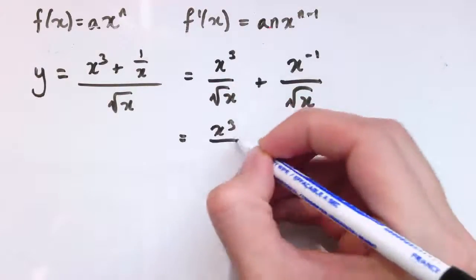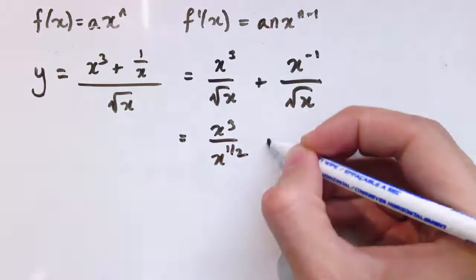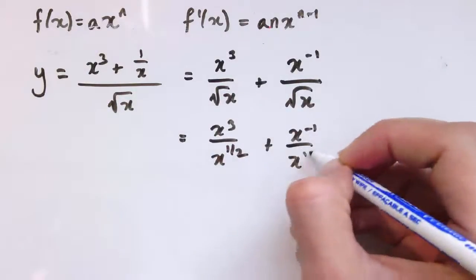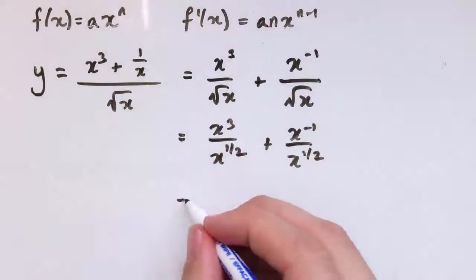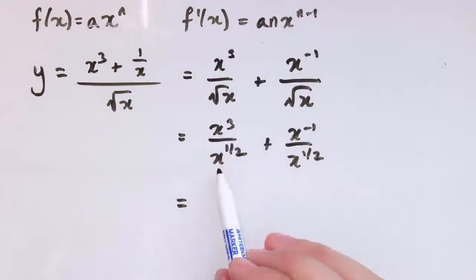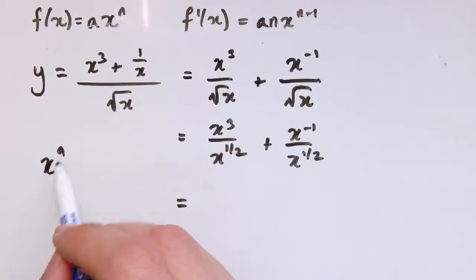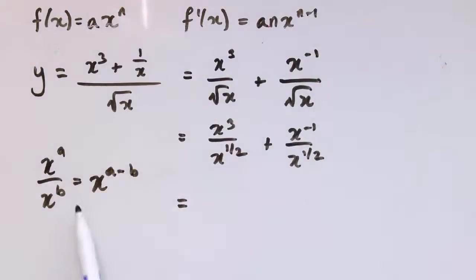Now, well, we've got x cubed over x to the 1/2, and we've got x to the minus 1 divided by x to the 1/2. And the rules of indices say that when I divide, if I have x to the a divided by x to the b, that's x to the a minus b. So I need to do 3 minus 1/2. That gives us 5 over 2, or 2 and 1/2.